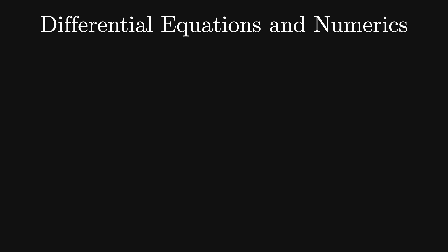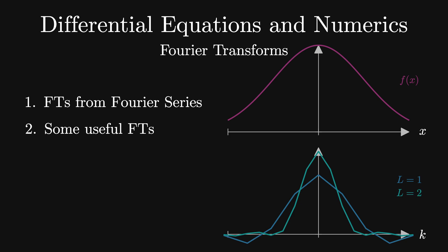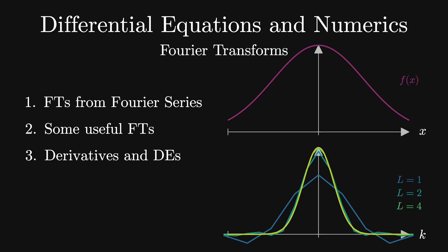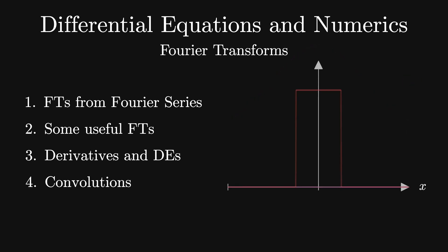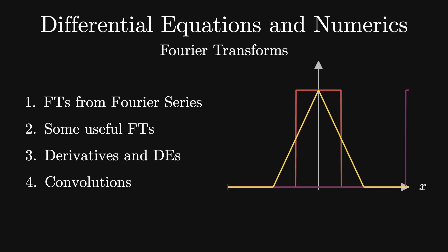Hello and welcome to the next video in our unit on differential equations. In this video, we'll look at a few techniques for turning differential equations into algebra plus an integral or two using Fourier transforms. We'll derive the Fourier transform from looking at Fourier series, then look at some properties and common Fourier transforms. We'll then take the Fourier transform of the derivative to reduce differential equations in real space into algebraic equations in Fourier space. Lastly, we'll show that solutions to inhomogeneous boundary value problems are actually convolutions of Fourier transforms of functions.